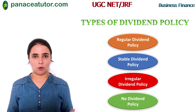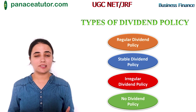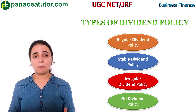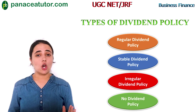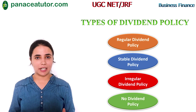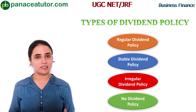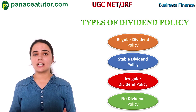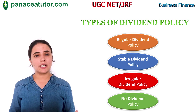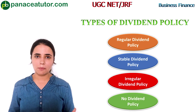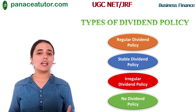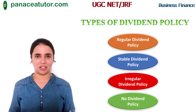Next is stable dividend policy. Under stable dividend policy, the company declares dividend every year. No specific dividend payout ratio or amount is fixed, but the company will declare dividend every year. The types of stable dividend policy can be: constant dividend per share, constant dividend payout ratio, or stable dividend plus extra dividend.